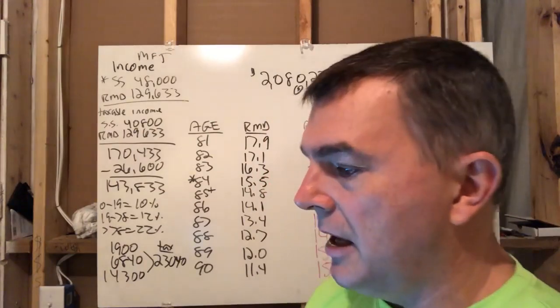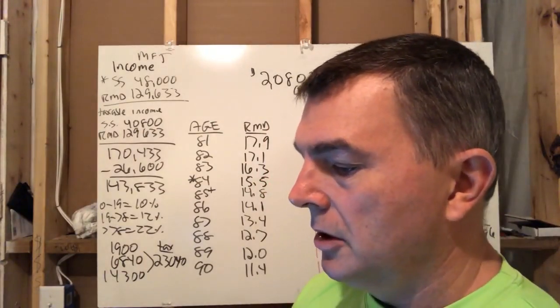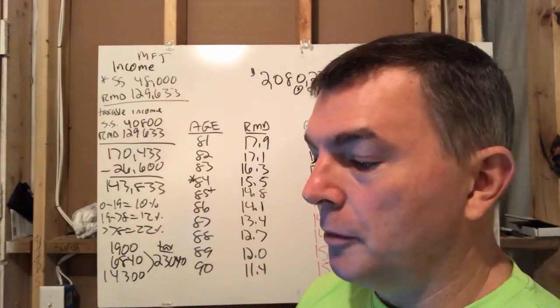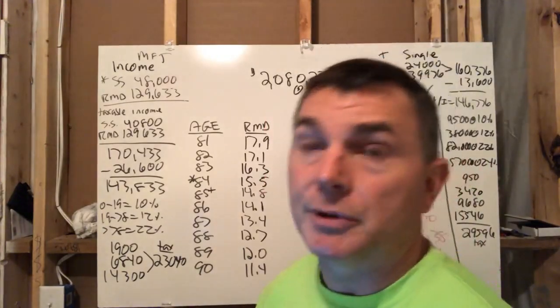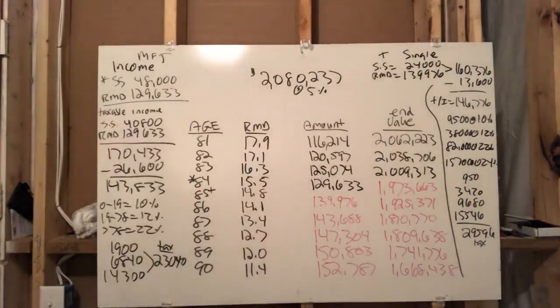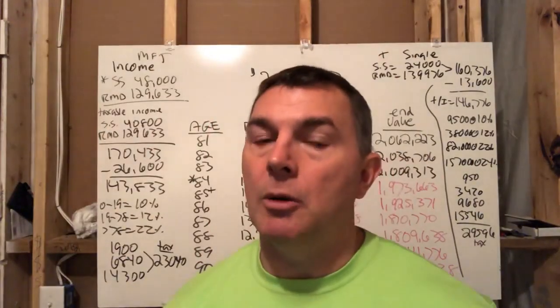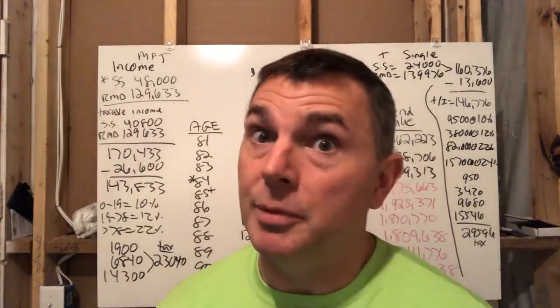After her standard deduction of 13,600, her taxable income is 146,000. And if you look at the trusty tax brackets for a single person, 0 to 9,500 is at 10%. 9,500 to 38,000 is at 12%. 38,000 to 82,000 is at 22%. 82,000 to 157 is at 24%. And so what's going to happen is she has taxable income of 146. So she's still in the 24% bracket, but pretty soon she will be in a 32% bracket in about two years.